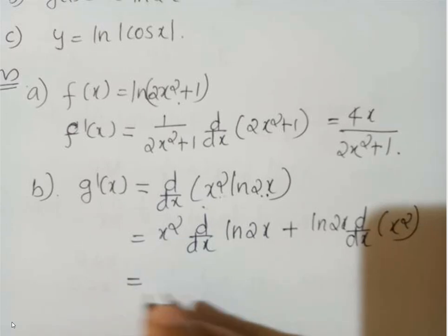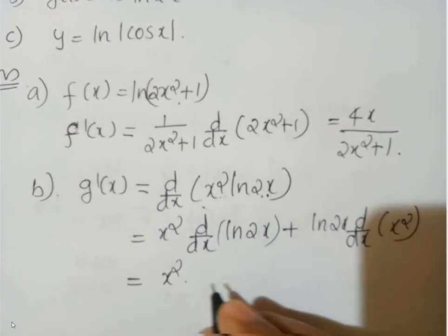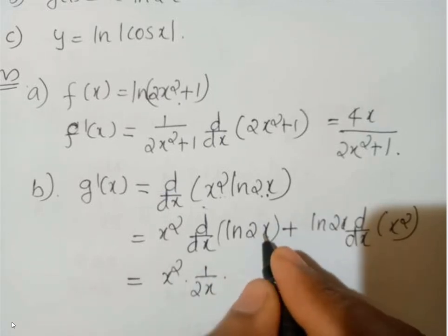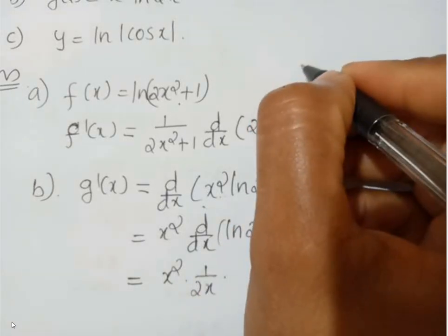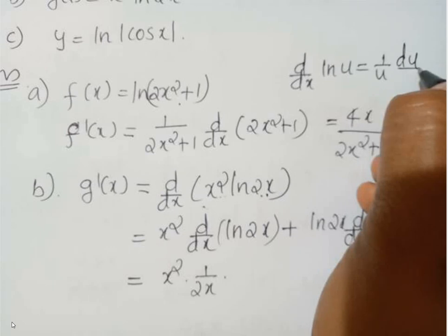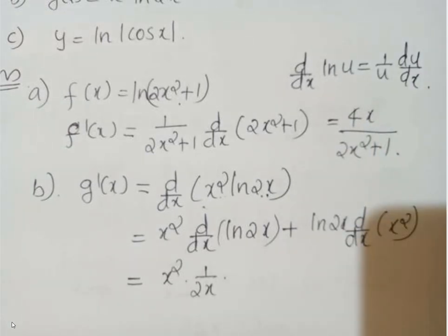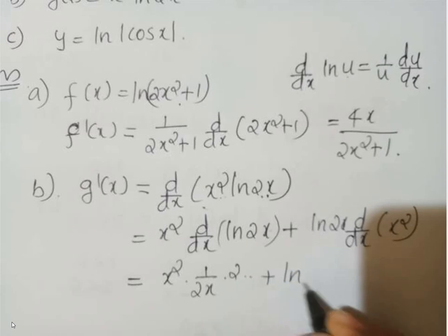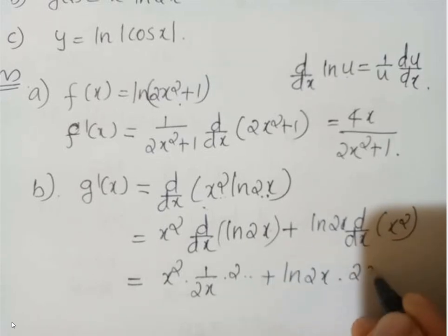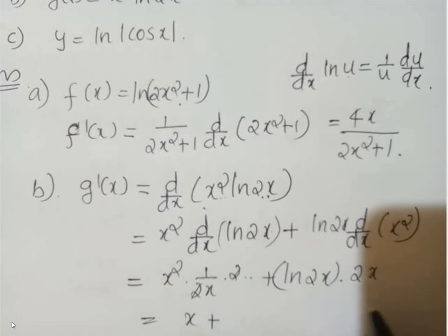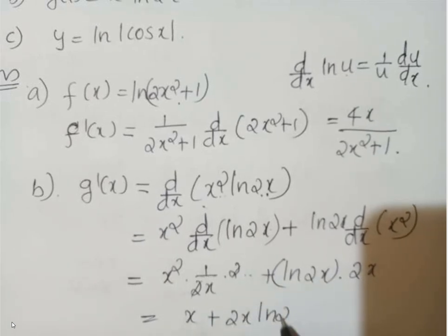Now d/dx of ln(2x): using d/dx of ln(u) = 1/u · du/dx, with u = 2x, that gives 1/(2x) · 2. So x² · (1/x) + ln(2x) · 2x — the 2 cancels and x cancels — giving 1 + 2x ln(2x). So the answer is 1 + 2x ln(2x).